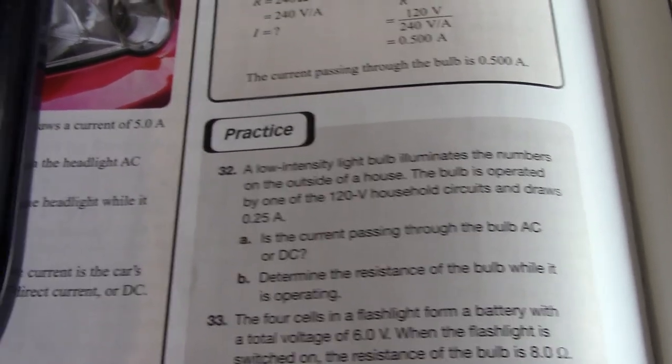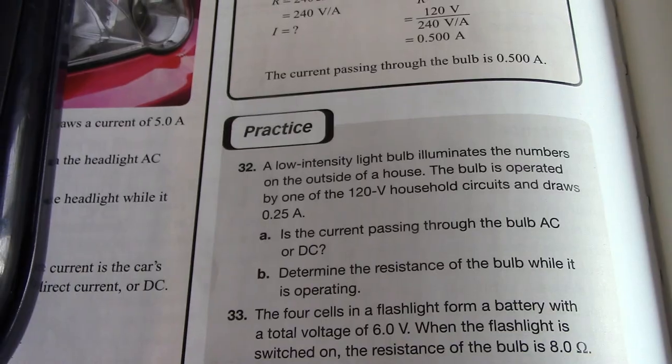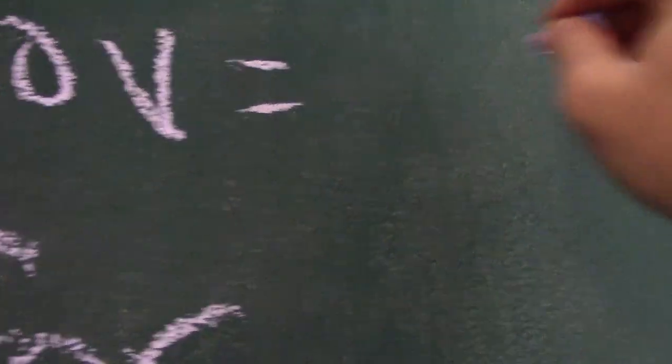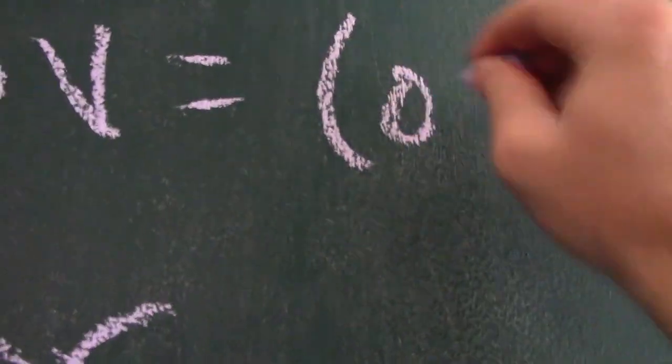The second part asks to determine the resistance using V equals I times R. Voltage is 120 volts and current is 0.25 amps; we're solving for resistance.